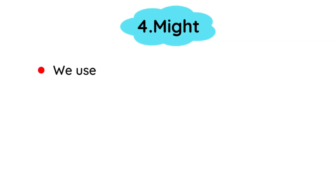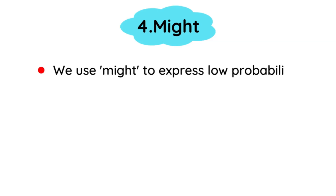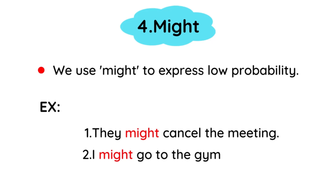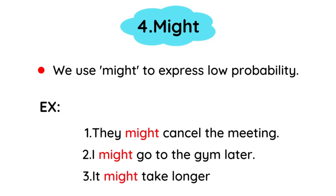Might. We use might to express low probability. Examples: They might cancel the meeting. I might go to the gym later. It might take longer than expected.